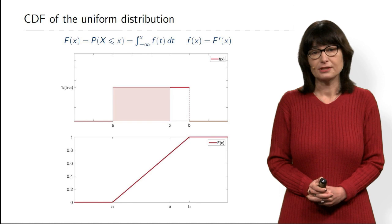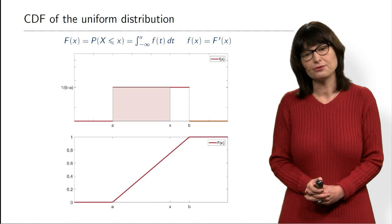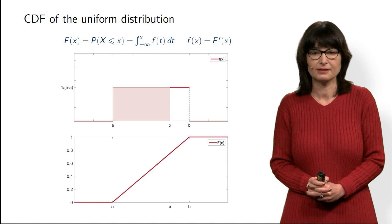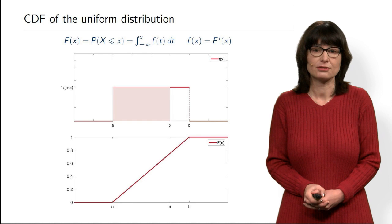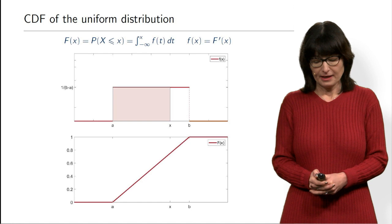Looking at the picture of the CDF: it starts at 0, rises linearly during the interval [A, B], then stays at 1. Notice that the density is a derivative of the CDF — the function is linear, and its derivative is a constant — so everything is consistent.